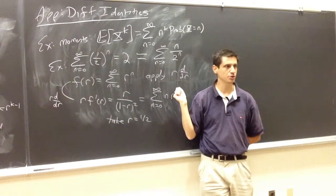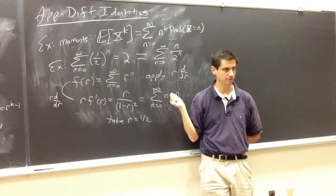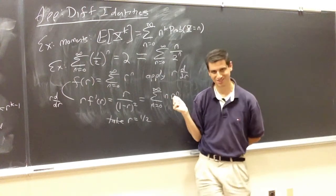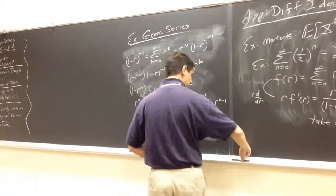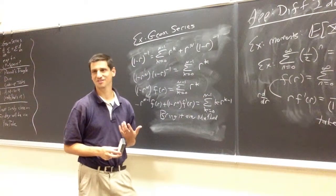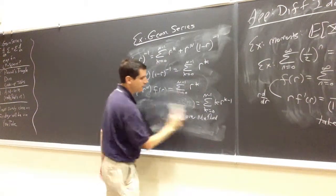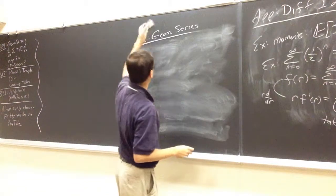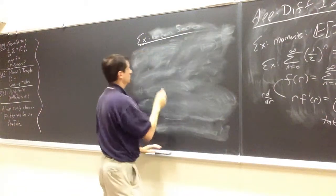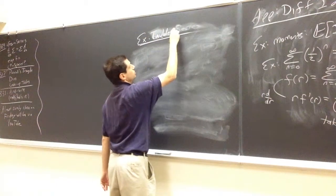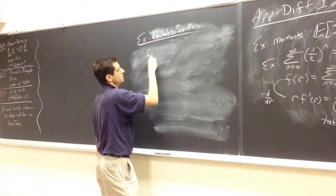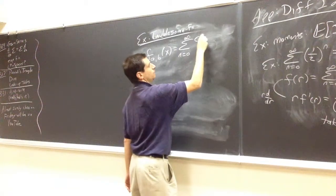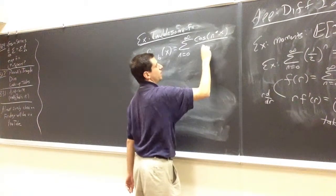Because we've shown this is useful, a natural question is: do we really have to be this careful? Is it maybe the case that the physicists and economists are right and you don't have to worry about convergence issues? The answer is no. Can you come up with a series where you cannot differentiate term by term? Let's call it a troublesome function. Let f sub a,b of x be the sum n goes from 0 to infinity of cosine(n to the a times x) divided by n to the b.